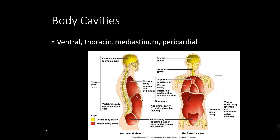Which body cavities can you find the heart in? This goes back to stuff we learned in A&P 1. We are in the ventral body cavity, which is all the red stuff. We are in the thoracic cavity, which is everything above the diaphragm. We're in the mediastinum, which is all the central stuff. And then we're in the pericardial cavity, which is the serous membrane that goes around the heart.